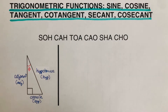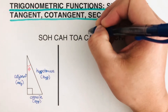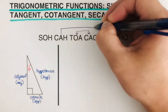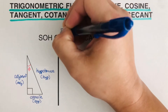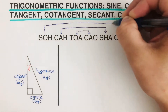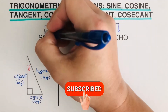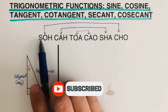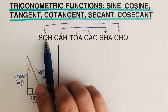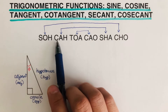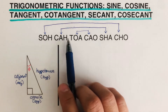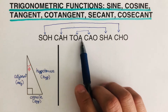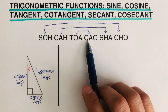These two are partners, this next two are also partners, and these two are also partners. What we mean by partner is that they are reciprocal to each other. So sine theta is equal to opposite over hypotenuse, cosine theta is equal to adjacent over hypotenuse, and tangent is equal to opposite over adjacent.